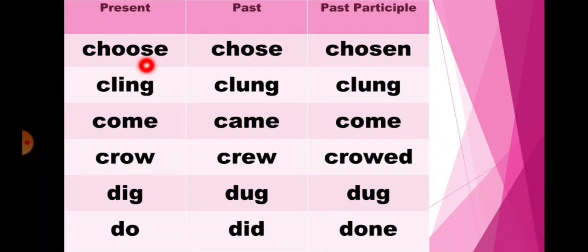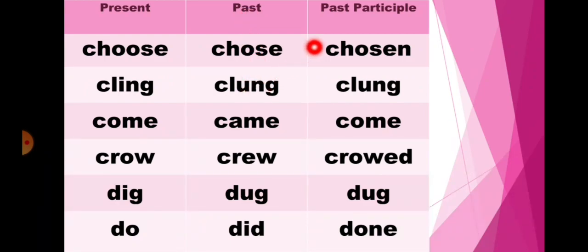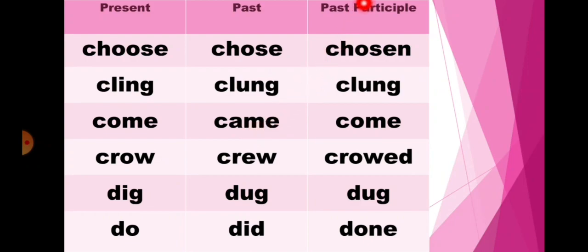In present choose, in past it will change into chose, and past participle chosen. In present cling, then in past it will change into clung, and past participle also clung. In present if it is come, then in past it will change into came, and past participle come.